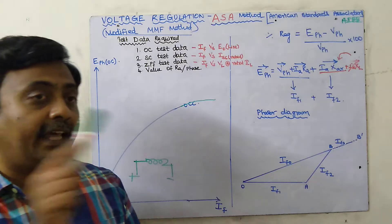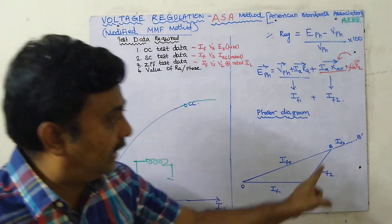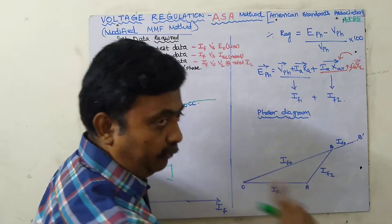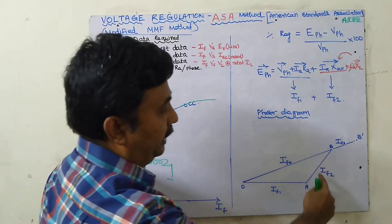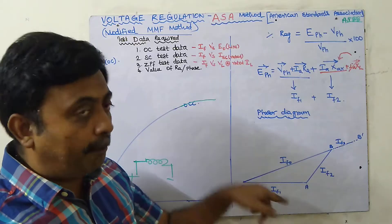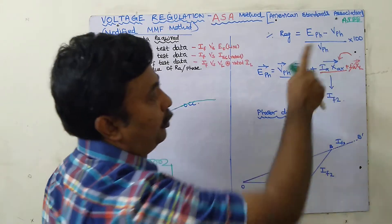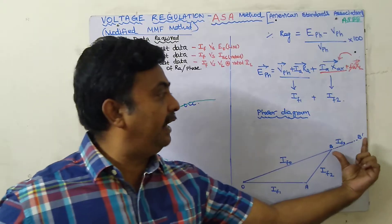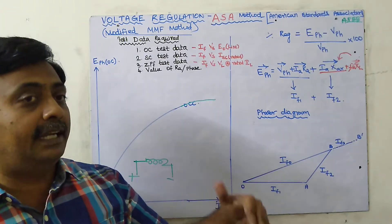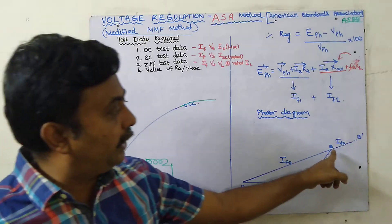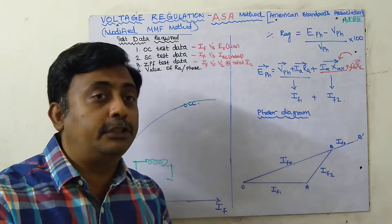This magnetic saturation is not taken into account in the MMF method, but in this modified MMF method — the ASA method — it is also taken into account. We have IF1 as one field current and IF2 as another. IF1 is required to produce rated voltage and overcome armature resistance drop; IF2 is to overcome armature reaction drop. We add the two to get IF0, but we must also add an extra term BB-dash, which is IF3, to account for magnetic saturation. We should also know the procedure of the ZPF method.